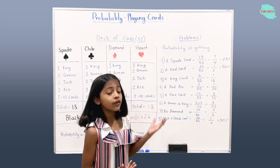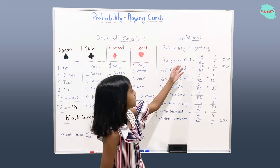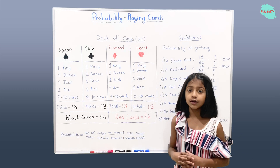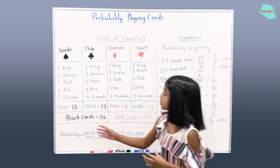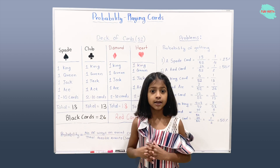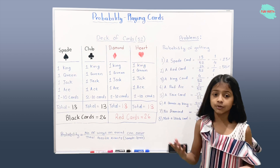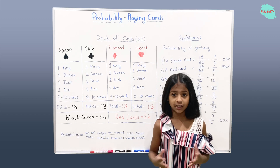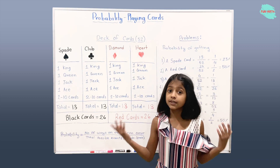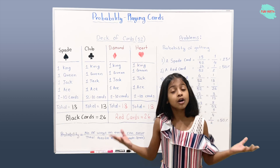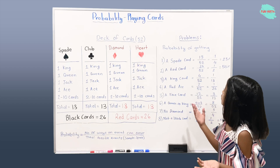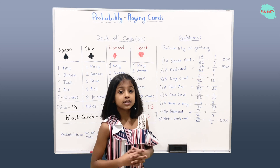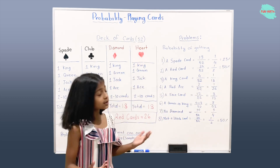Let's solve the first example. Probability of getting a spade card is 13 over 52. We have 13 as our numerator because in Spade Suit we have total 13 spade cards — that's the number of ways an event can occur. We have 52 as our denominator because that's the total possible events; we have total 52 cards. So 13 over 52 can also be called 1 over 4, or 25%.